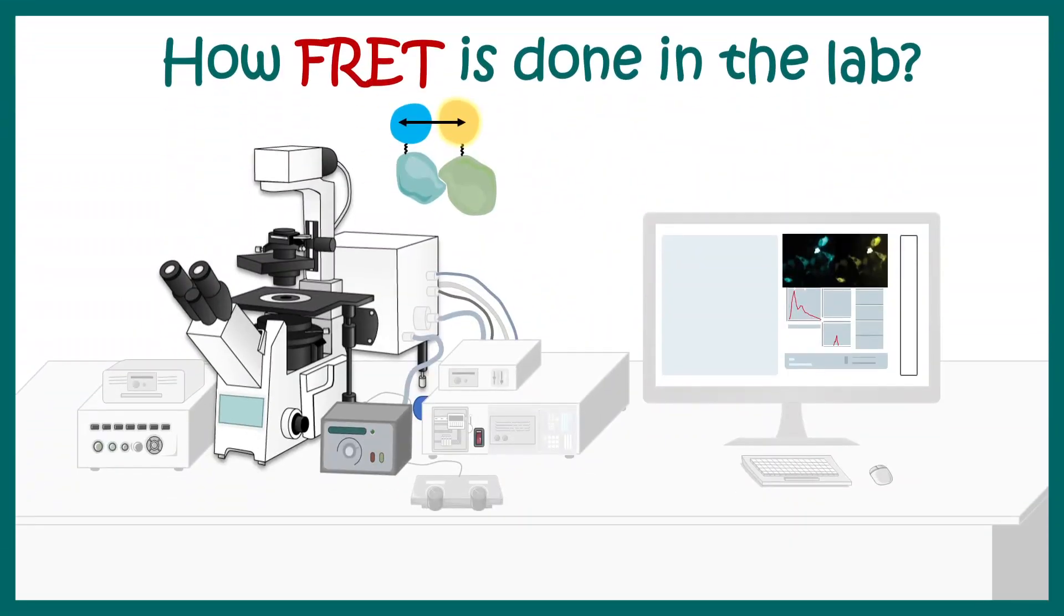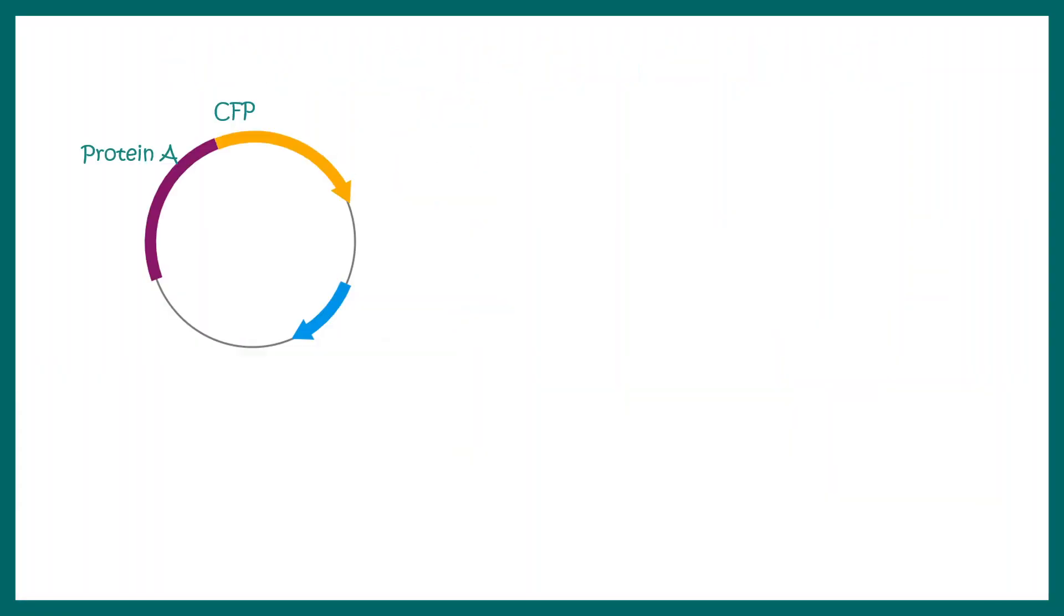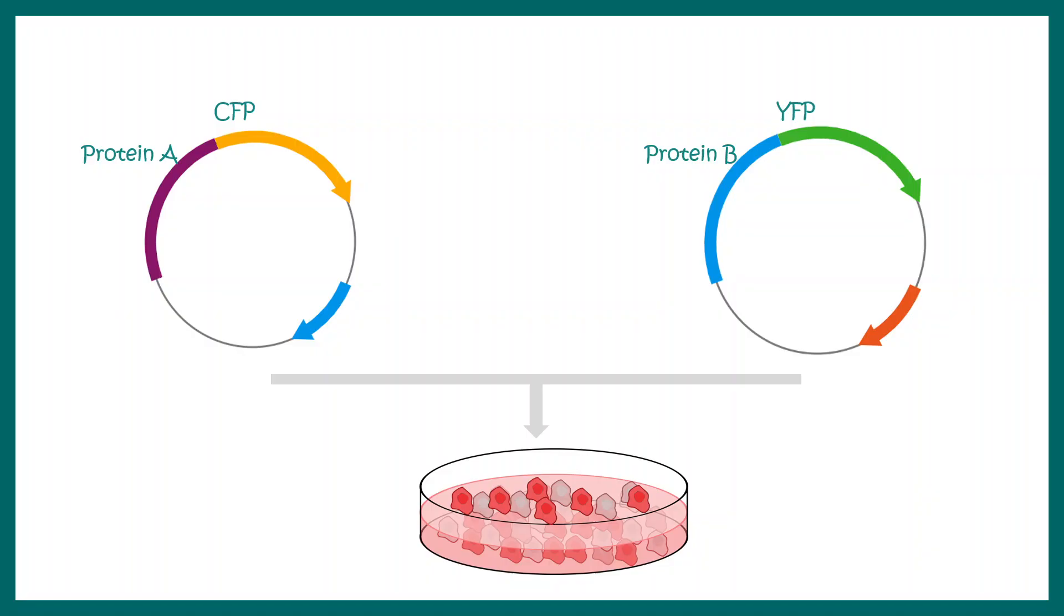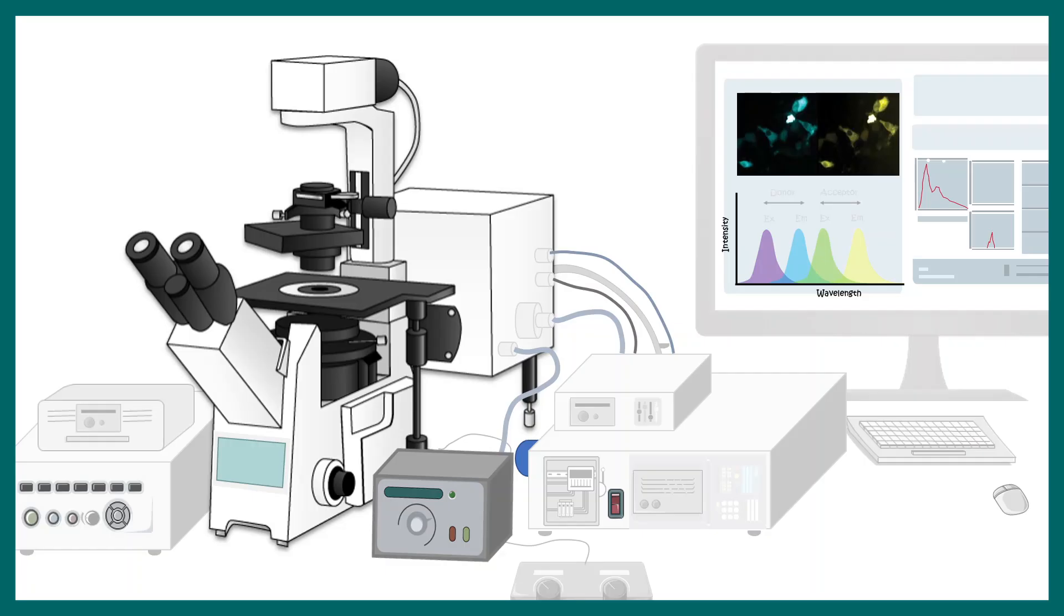Now let's talk about how FRET is done in the lab. In order to do FRET, we need to express the FRET constructs inside our cell or tissue. Let's say we want to study a protein-protein interaction using FRET assay. We have expressed protein A with the cyan fluorescence protein and protein B with yellow fluorescence protein, and then we have transfected both these expression plasmids into a cultured cell. These expression plasmids would be expressed inside these cells and they would generate the proteins or the FRET constructs. Then using a fluorescence microscope, we can image FRET in real time.